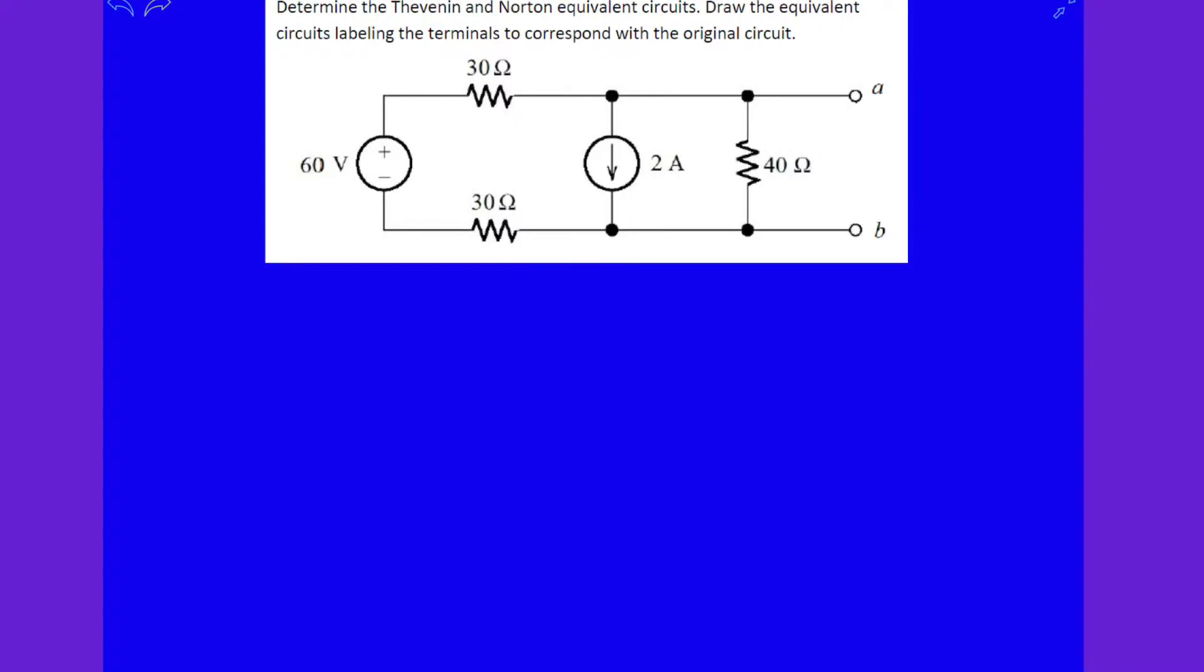And three resistors. Let's analyze for R_th. Step one is that you short circuit all independent voltage sources and open circuit all independent current sources. Let's do that and draw the equivalent circuit.